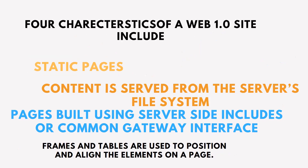The content served was in the server file system, meaning the content was served from a server. That means a server-client model. Pages were built on the server side using the common gateway interface, and frames and tables were used to position and align elements on a page. These were some of the major characteristics of a Web 1 website.